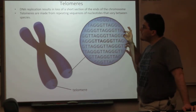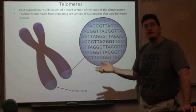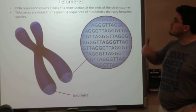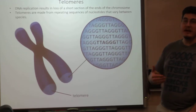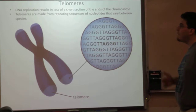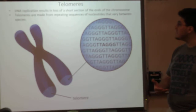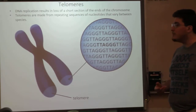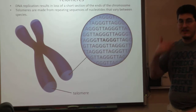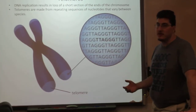Telomeres are shortening sections of DNA that do not code. They're actually repeating units with the same sequence repeated over and over again. Because DNA replication results in a loss of a short section of nucleotides at the end of a chromosome every time you replicate that DNA strand, a telomere has a protective function.